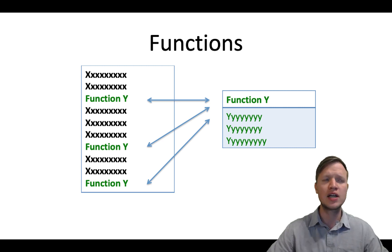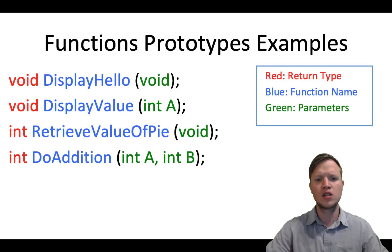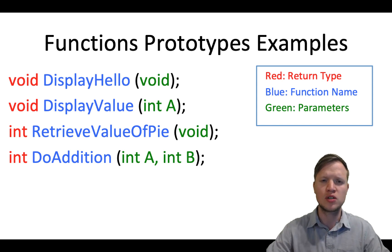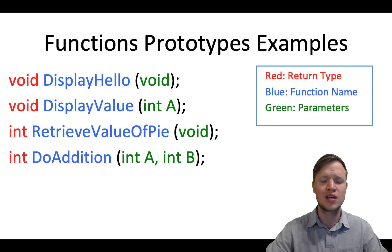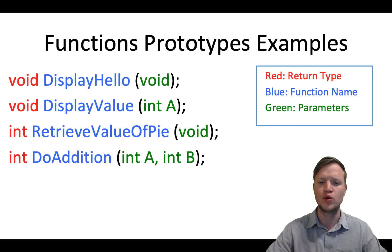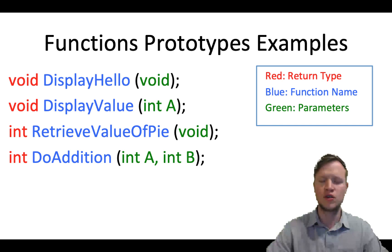So let's look at some syntax concerning functions in C programming — specifically function prototypes. Function prototypes explain what the function will return, the name, and what it will receive. In layman's terms: input and output to the function and its name. Let's look at the first example: void display(void) semicolon.